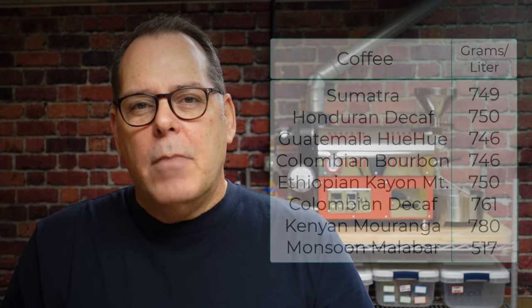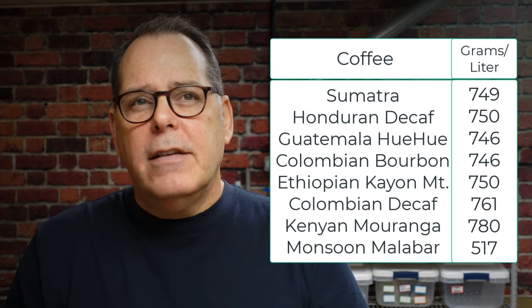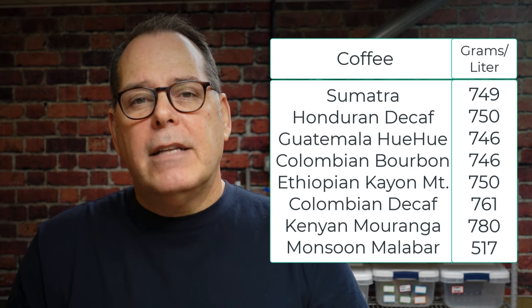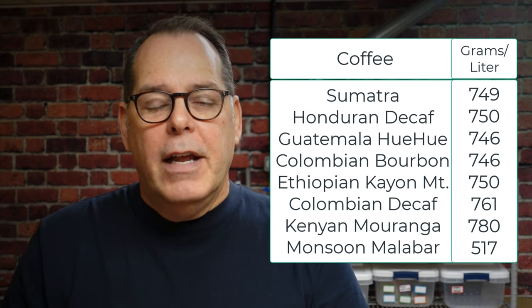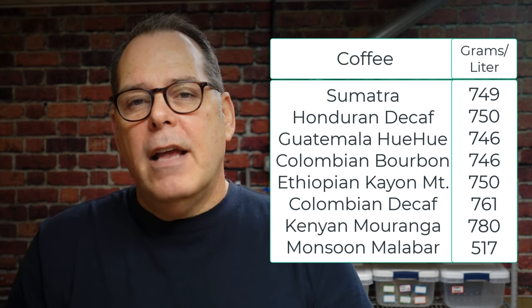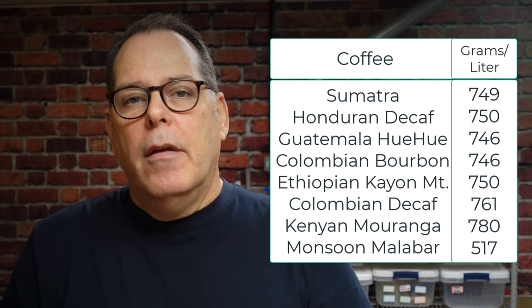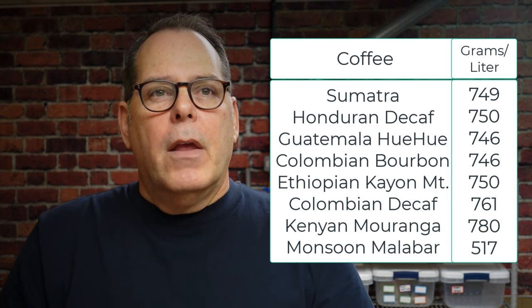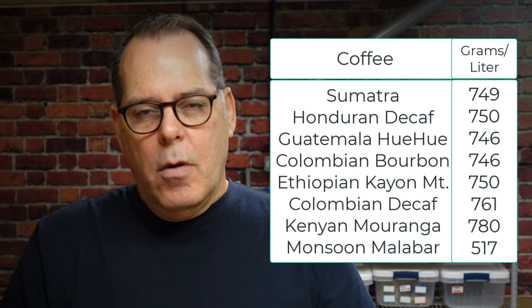I compared several beans using this method. A Sumatra got 749, a Honduran decaf got 750, a Guatemalan Huewe got 746, a Colombian Pink Perbone Natural got 746, a Kayan Mountain Ethiopian got 750, a Colombian decaf got 761 — surprisingly high given that the decaffeination process significantly impacts the cellular structure through water pressure — a Kenyan Moronga scored 780, and a Monsoon Malabar scored just 517.